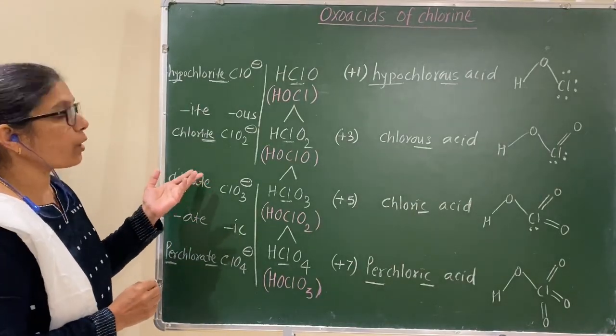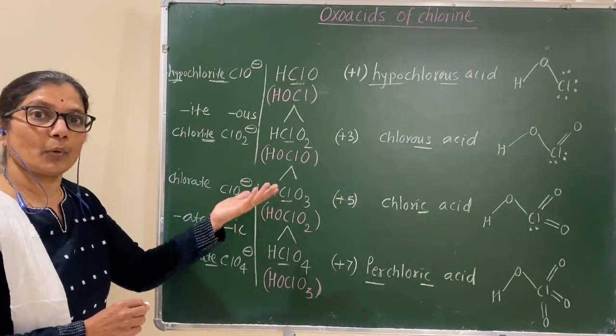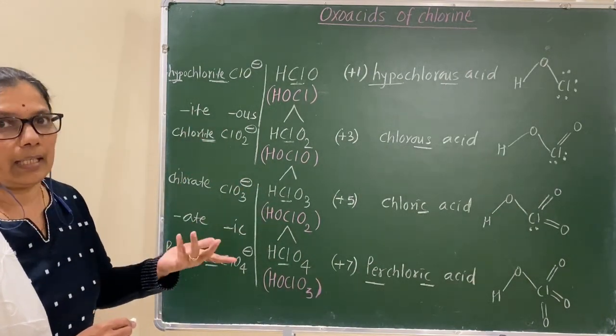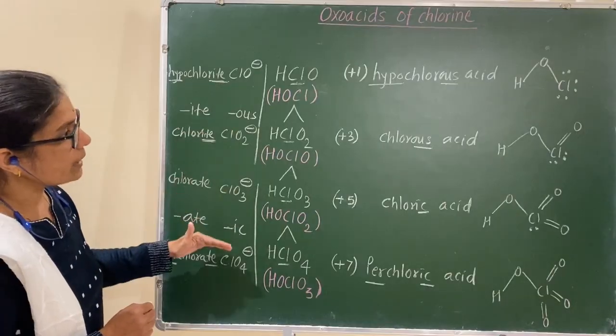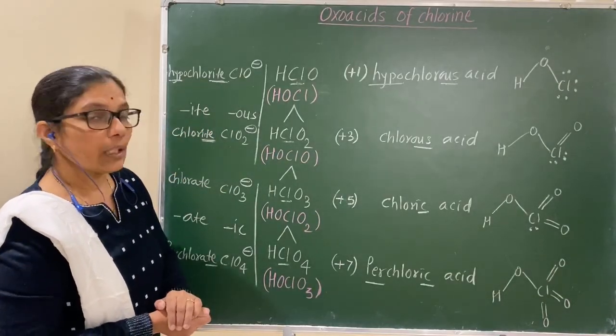Now, you can write the names of sodium chlorate, sodium perchlorate, potassium chlorate, potassium hypochlorite, sodium hypochlorite. Like this. It's about the ions and their salts.